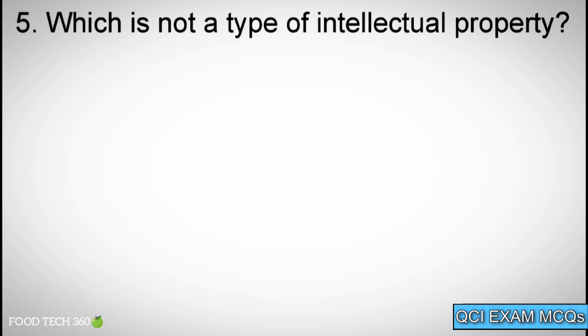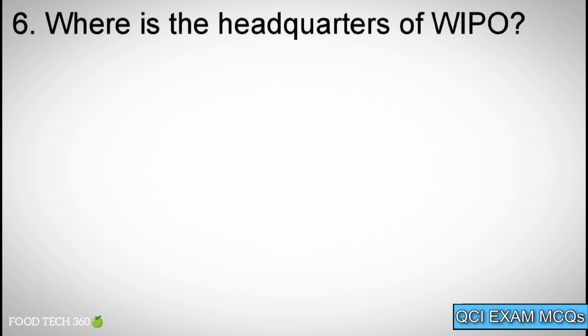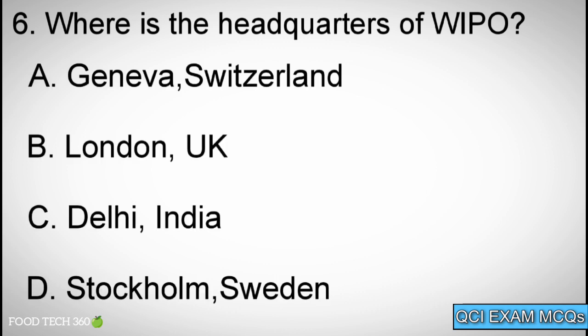Question number five: Which is not a type of intellectual property? Options: A. Trade Secrets, B. Trademarks, C. Home Loans, D. Copyrights. Correct answer: C. Home Loans.